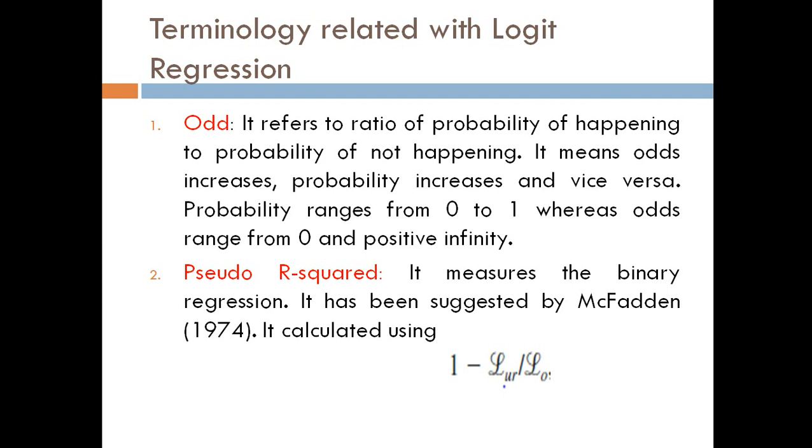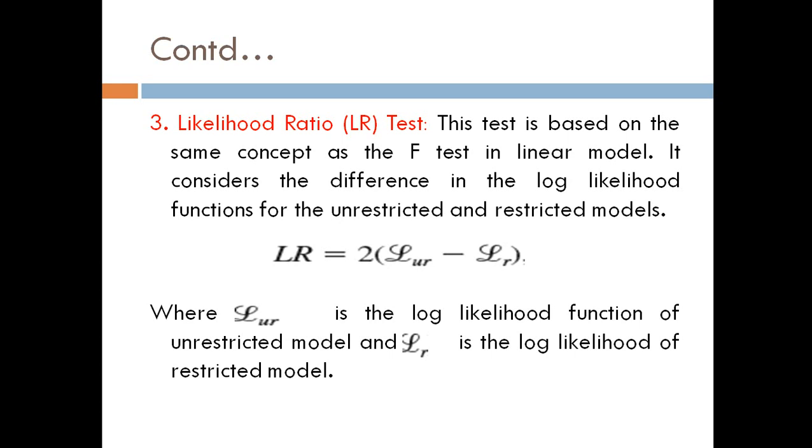Here LUR is the log likelihood of the unrestricted model. Third is the likelihood ratio test, which is very famous as the LR test. This test is based on the same concept as the F test in linear models. It considers the difference in the log likelihood functions for unrestricted and restricted models, calculated using the formula 2 times LUR minus LR.